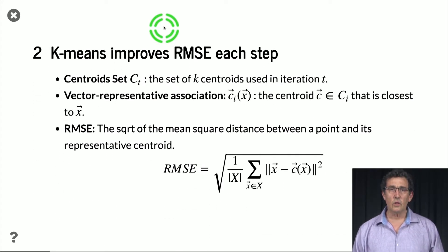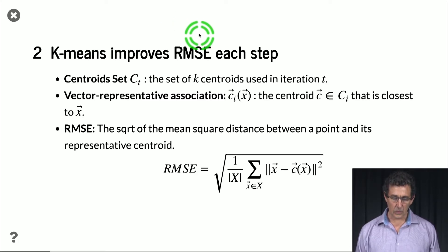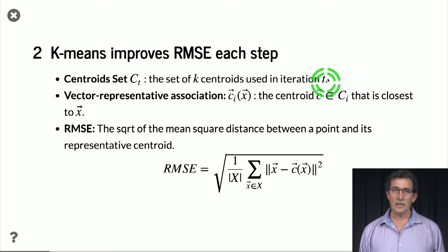So the main quantity that we're going to keep track of in the k-means algorithm is the RMSE, or root mean square expectation. And so at each time step of the algorithm, we have a set, I call it CT with big C. The CT that is the set of k centroids that are used in that iteration. It's a set of k vectors.